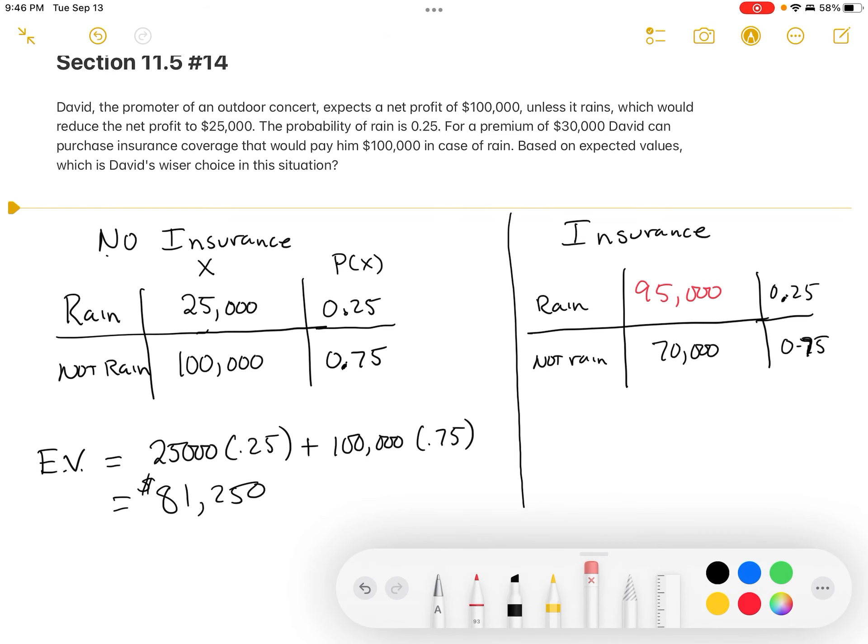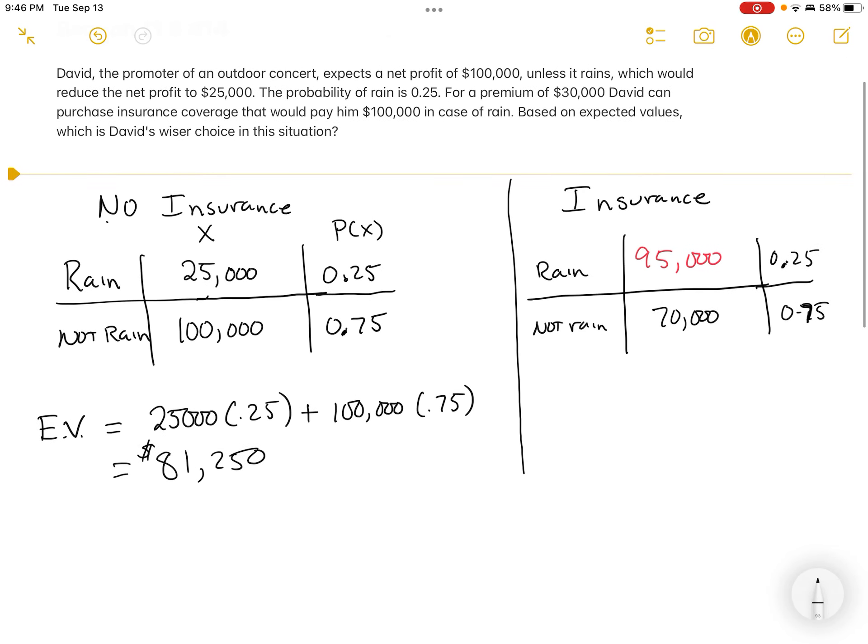But what's the expected value? Because the expected value will take into account the probabilities. Because we don't know if it's going to rain or not. Obviously, if we knew it was going to rain, it's good to buy the insurance, but it may not rain. And we're sacrificing a lot of money there. Let's go ahead and look at this expected value. Easy. We just follow the formula. $95,000 times its probability plus $70,000 times its probability. Let me run that. It's $76,250.